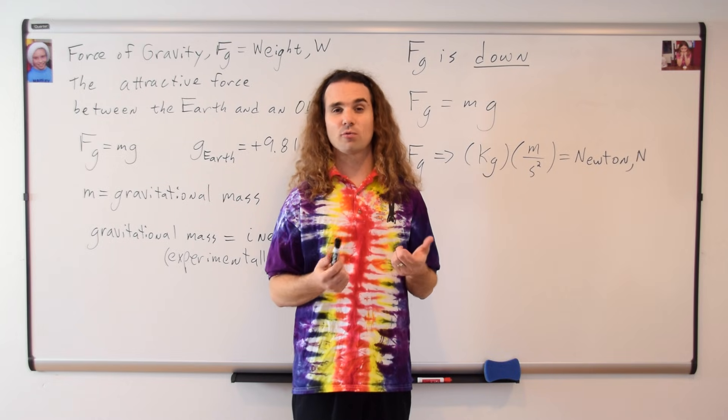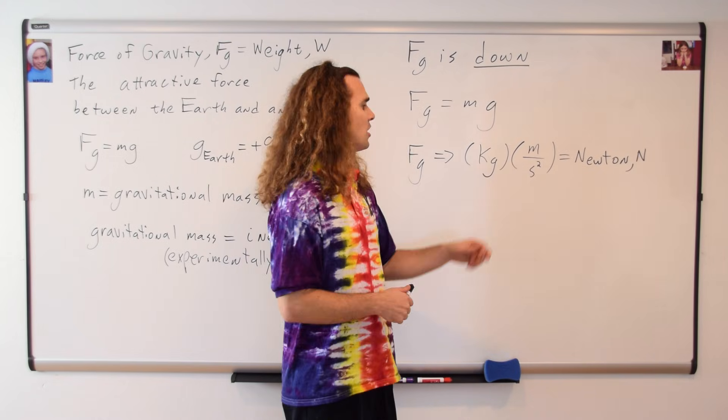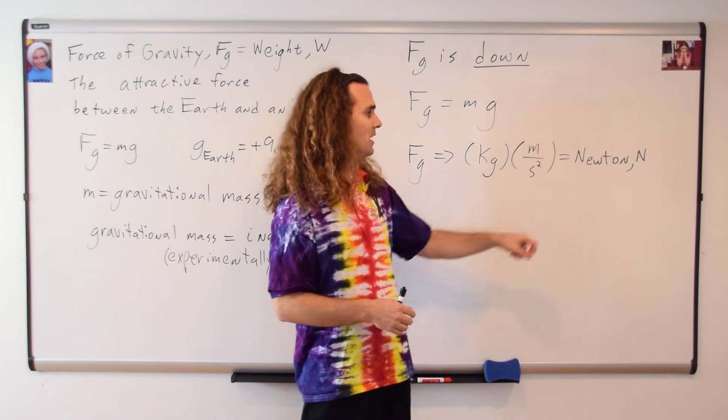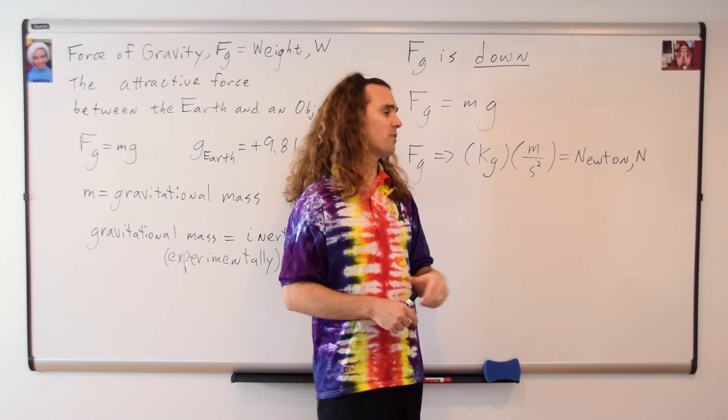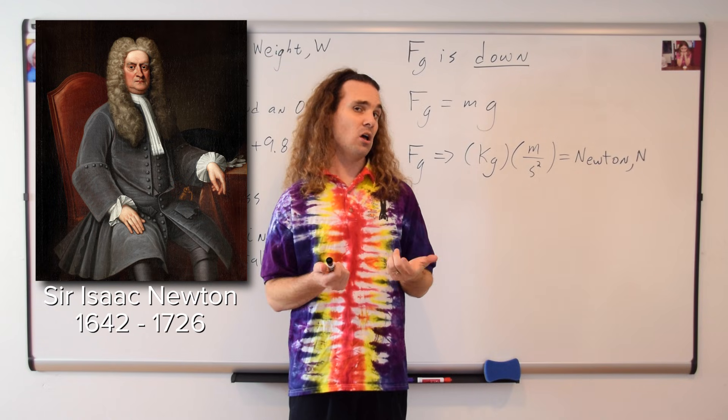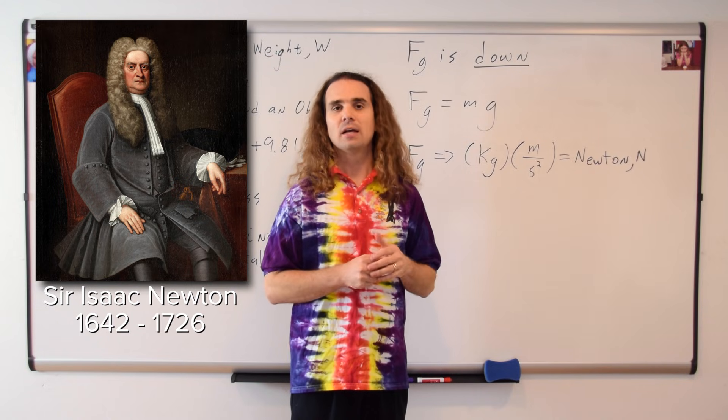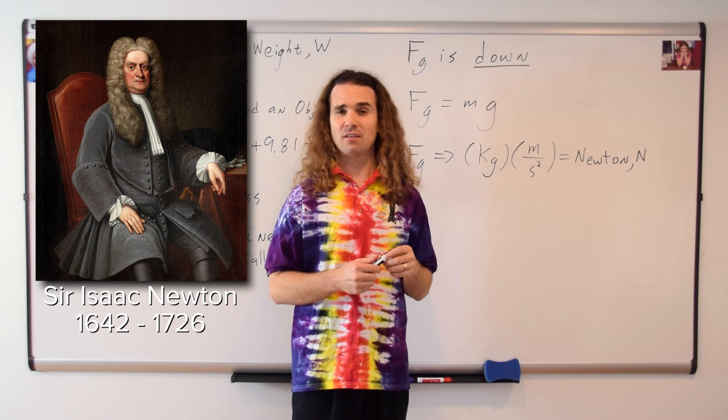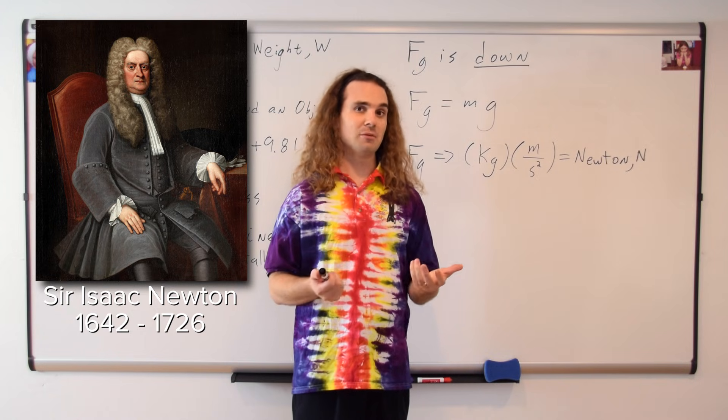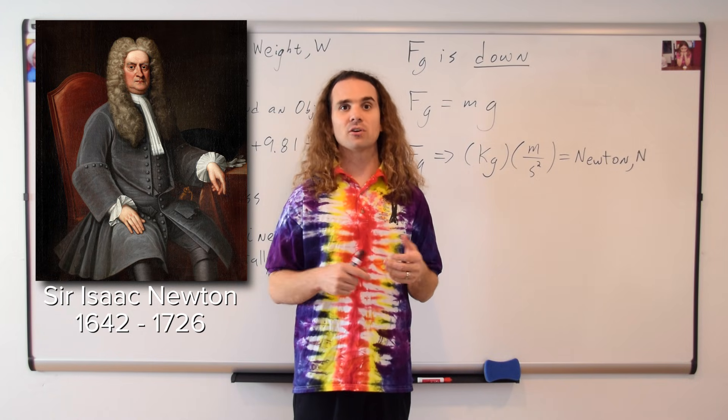So the base SI dimensions for the force of gravity, and actually all forces, are kilograms times meters per second squared. We give this a special name. We call it a Newton. We abbreviate that with a capital N, after Sir Isaac Newton, a great scientist whose three laws we're going to be learning very shortly, and whose name actually identifies the branch of physics we're learning currently, which is Newtonian mechanics, also called classical mechanics.